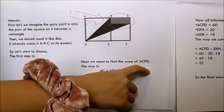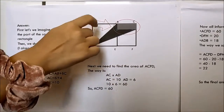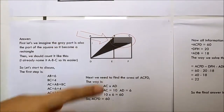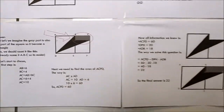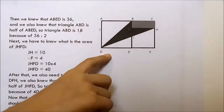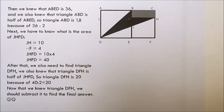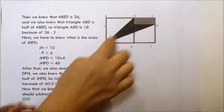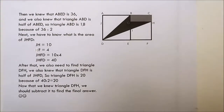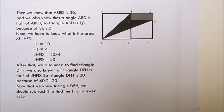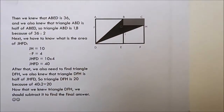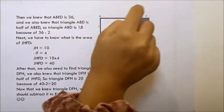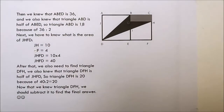Next, we find the area of rectangle ACFD. The area is AC times AD, which is 10 times 6, so ACFD is 60. We also know that square ABED is 36, and triangle ABD is half of square ABED, so triangle ABD is 36 divided by 2, which is 18. Next, we find the area of rectangle DHFD: DH is 10 and HF is 4, so rectangle DHFD is 10 times 4, which is 40.